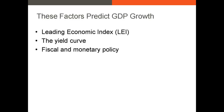There are several factors that have been found to predict GDP growth. First we'll look at the Leading Economic Index, or LEI, which is an index of 10 different leading economic indicators. Then we'll look at the yield curve, and finally we'll look at how fiscal and monetary policy can affect GDP growth.